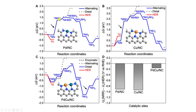For the Pd-NC catalyst, the rate determining step is the N2 to NNH formation — the first protonation step. For the copper single atom catalyst, N2 to NNH formation is also the rate determining step. For the Pd-Cu dual atom catalyst, the rate determining step is NH2 to NH3 formation.